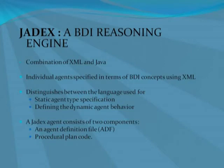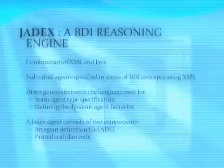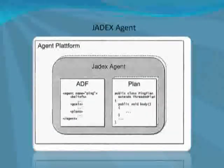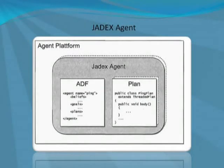This is a diagram of a JDEX agent. For defining ADFs, an XML language is used that follows the JDEX BDI meta model specified in XML schema. The plan bodies are realized in an ordinary programming language, for example Java, and have access to the BDI facilities of an agent through an application programming interface.